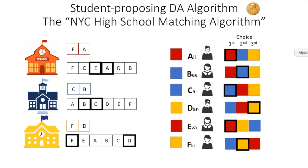Notice that despite Cal, Dan, and Flo all putting the blue school as their first choice, B — who put the blue school only as her second choice — got the seat ahead of them because she is ranked higher on the blue school's priority list. And she's not penalized for having put the blue school as her second choice. This shows that the best strategy is always to put your true order of preference, because you are not penalized for doing so.